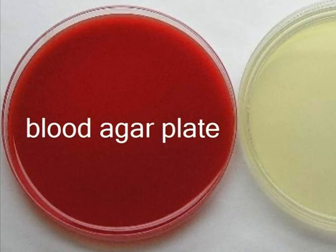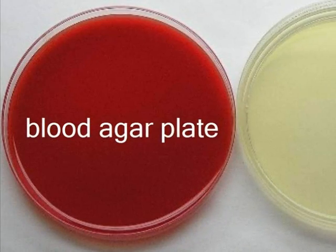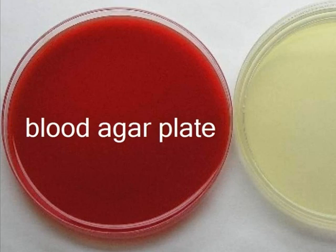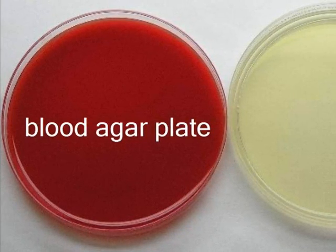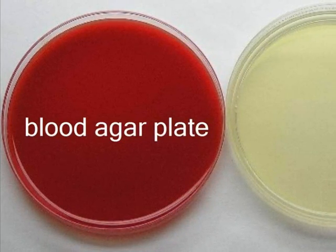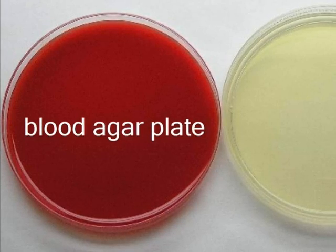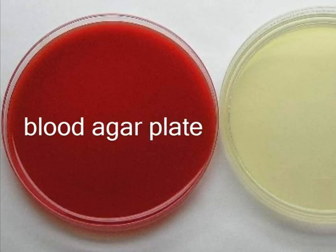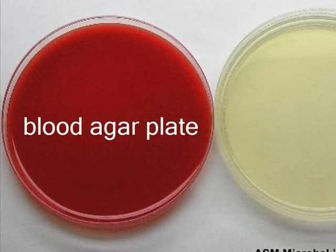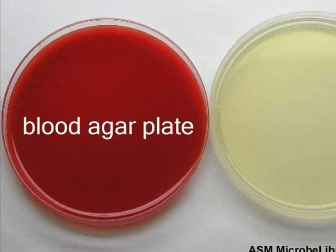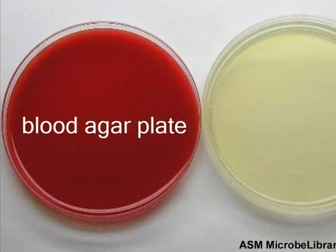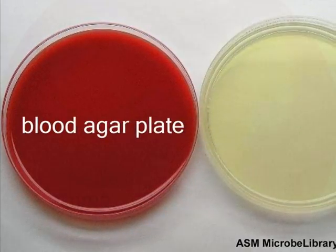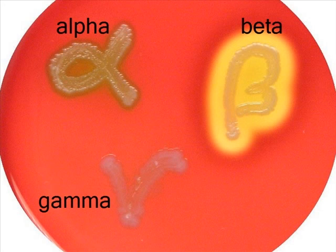Blood agar is named because it contains sheep's blood. Many bacteria that grow in or on the human body require complex sources of nutrients such as blood to grow well in the laboratory. Blood agar is also differential in that it allows you to see the type of hemolysis possible from microbes. Three types of hemolysis exist.